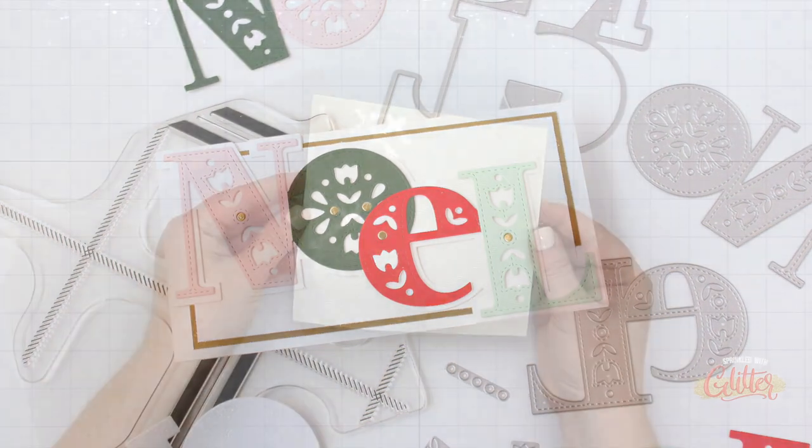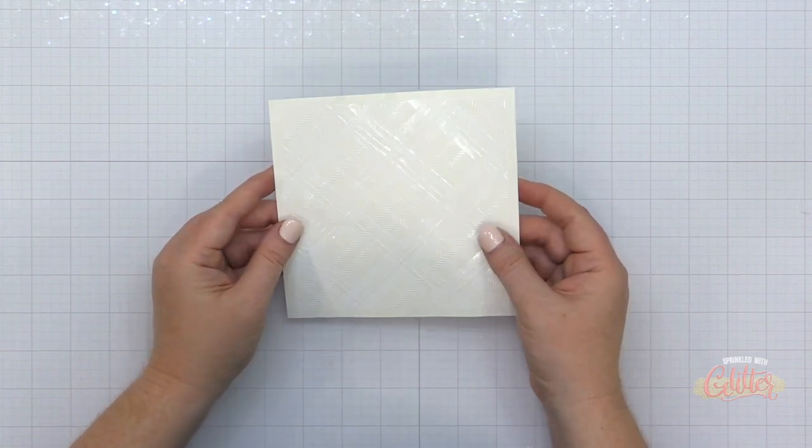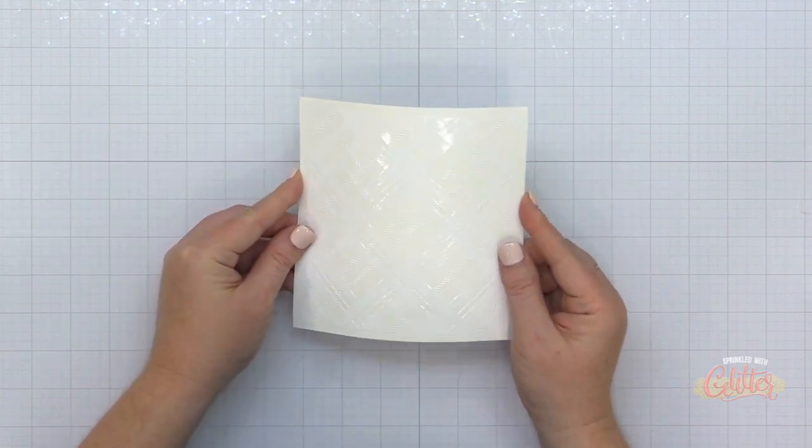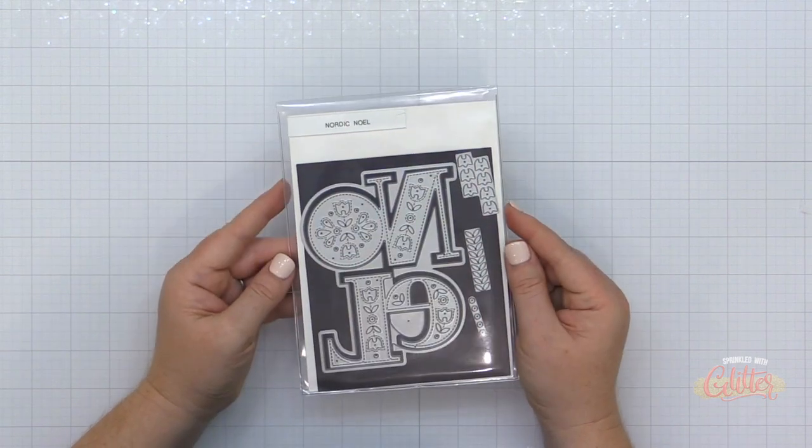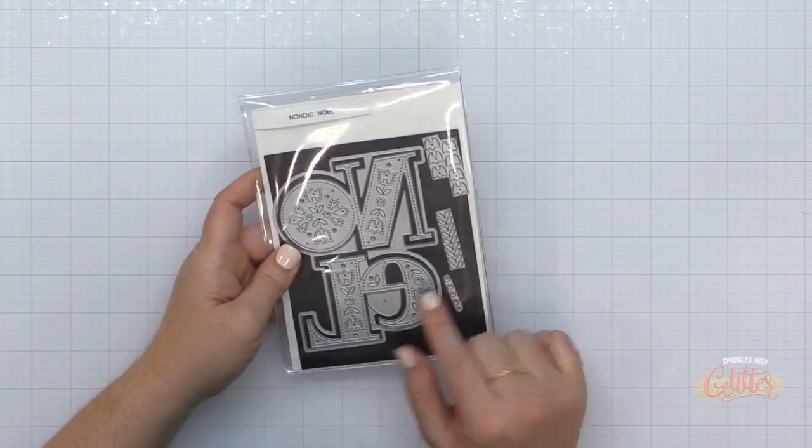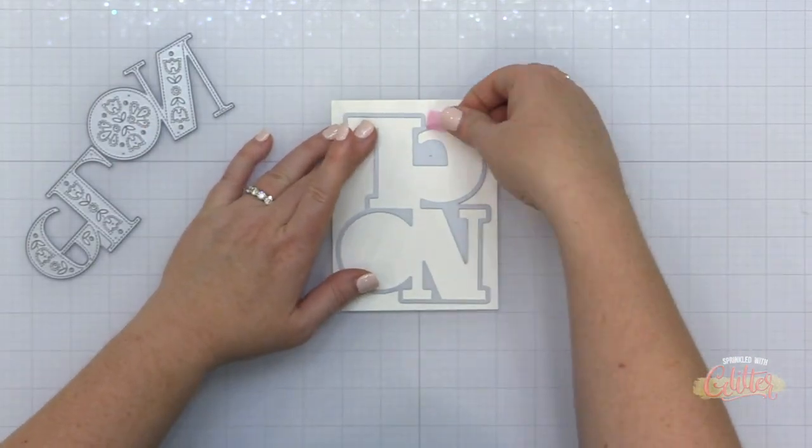Now if you did not catch my tutorial on the plaid turnabout stamp, I'm going to link it in a card in the upper right hand corner. I created this tone-on-tone plaid background and I'm going to be using that in today's card, but I wanted to really take a good look at this Nordic Noel die set.